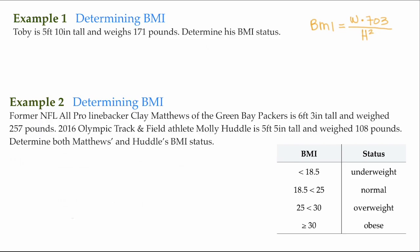For our first example, Toby is 5 feet 10 inches tall and weighs 171 pounds. Determine his BMI status. His BMI would be his weight, which is 171 pounds.